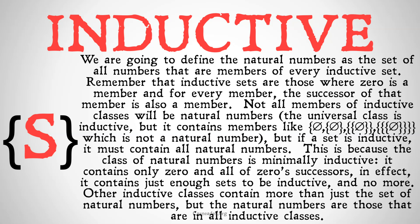But if a set is inductive, it must contain all natural numbers. This is because the class of natural numbers is what's called minimally inductive — it contains only zero and all of zero's successors. In effect, it contains just enough sets to be inductive and no more. Whichever set contains just enough sets to be inductive but nothing more is the set of all natural numbers. Other inductive classes contain more than just the natural numbers, but they all must at least contain every single natural number. And the set of natural numbers are those that are in all inductive classes.